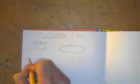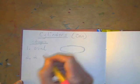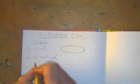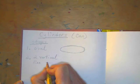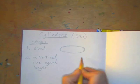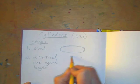So that's your first step. Step number two is two vertical lines equal length. So I have my oval.